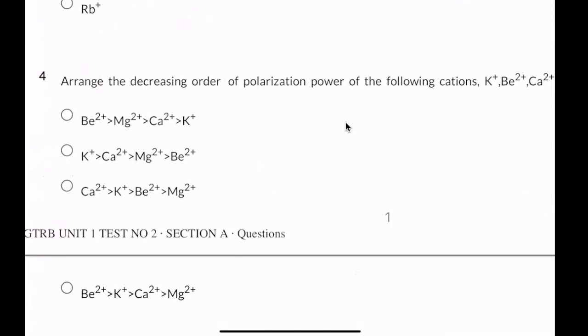Arrange in decreasing order of polarization for the following cations: K+, Be2+, Ca2+, Mg2+. The answer is Be2+, Mg2+, Ca2+, K+. If the size is smaller, the polarizing power is greater. Be2+ has the smallest size, so it has the highest polarizing power.